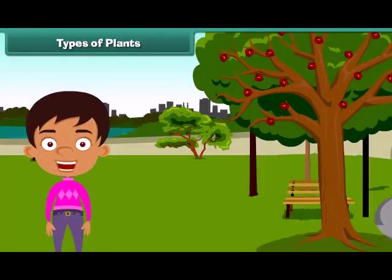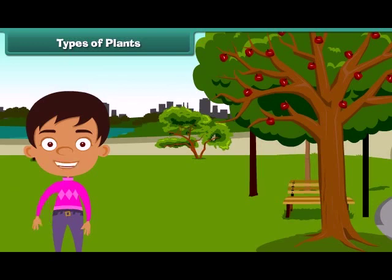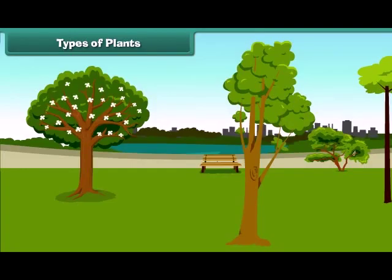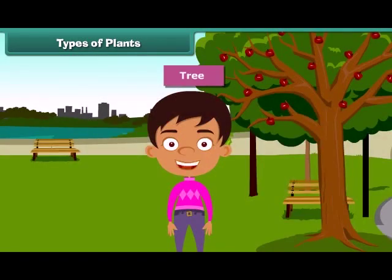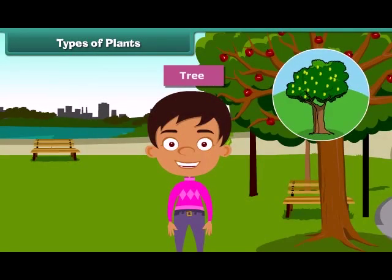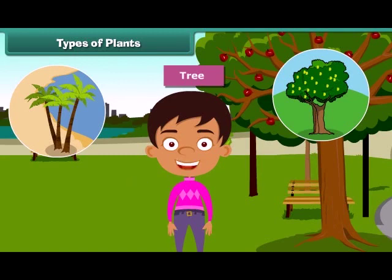Children, we often see different types of plants around us. We find that some of the plants are tall while some are small. Plants which are very tall and strong are called trees. For example, mango tree, coconut tree, and neem are tall.